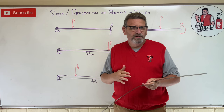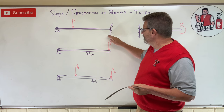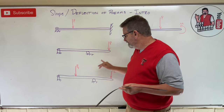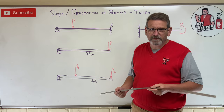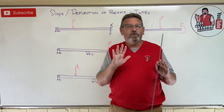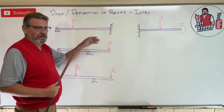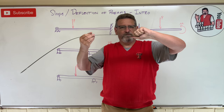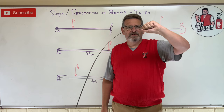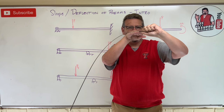We've got one up here that's fixed and then pinned with a load in the middle, then pin and roller with a load on the end, and then pin and roller with two loads. We're going to talk about slope and deflection — I want you to get an idea of what the slope would look like if a beam had that load on it. This first one has a fixed connection on one end, which means it's locked and can't move.